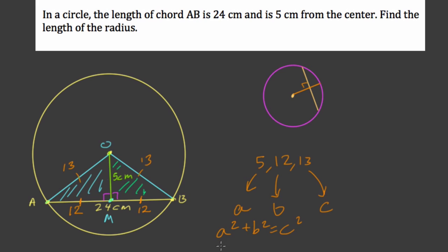So 5 and 12. So 5 squared is 25, plus 144. That would equal C squared. 25 plus 144 is 169. That equals C squared. So C has to equal the square root of 169. We're only interested in the positive length here. So that's 13.